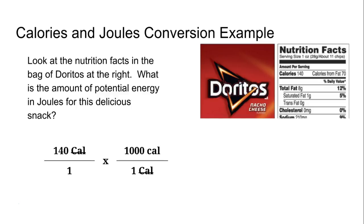And our next step, of course, is to get those calories into joules. And we know that there's 4.184 joules in one scientific calorie. So you can see all we do is take 140 times 1,000 times 4.184, and you get your answer of 586,000 joules.